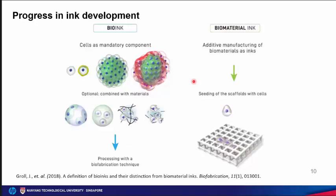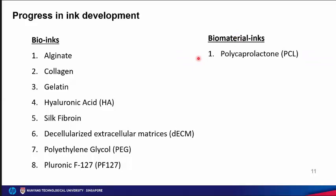Regarding ink development, inks used in bioprinting can be classified as bio-inks and biomaterial inks. Bio-inks have cells as the primary component and can be printed with or without materials. Commonly used bio-inks include alginate, collagen, gelatin, hyaluronic acid, silk fibrin, decellularized ECM (dECM), poly-lactic acid, hyaluronic acid/fibrin blends, and Pluronic F127. For biomaterial inks, poly-caprolactone (PCL) is commonly used, printed to create scaffolds for subsequently seeded cells.